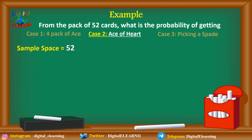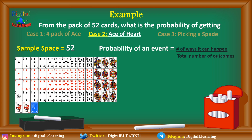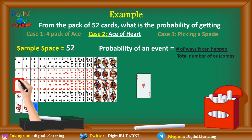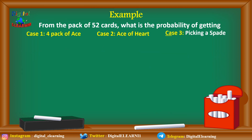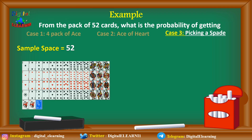The second case is the ace of hearts. Again, our sample space is 52. In this case there is only a single ace of hearts, so the probability is 1 divided by 52, giving a probability of picking the ace of hearts from a pack of 52 as 1.92 percent.